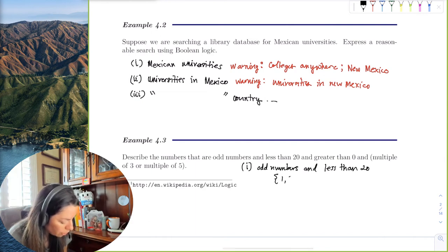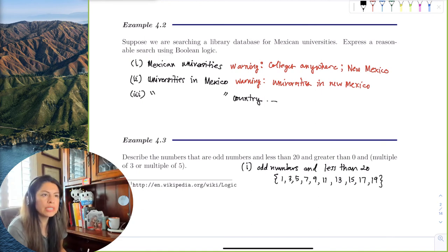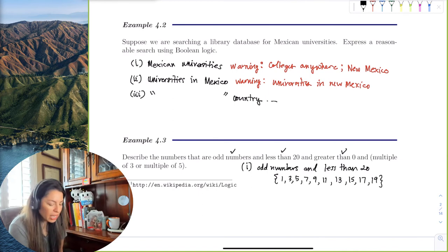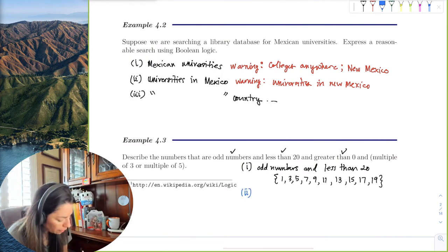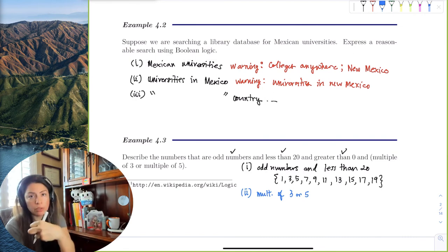Let's go ahead and write those out. So the first thing we'll do is odd numbers and less than 20. So we have 1, 3, 5, 7, 9, 11, 13, 15, 17, and 19. And so the second thing is we did odd numbers less than 20 and greater than zero, because they're all greater than zero. We did not include zero. And multiple of three or five. So this is the last one that we'll need.